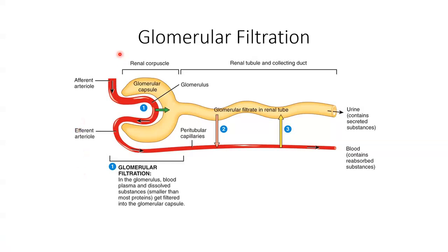Blood enters the glomerulus through the afferent arteriole, moving into that ball or cluster of capillaries within the Bowman's capsule. The blood is filtered through the filtration membrane. What remains in the bloodstream — mainly blood cells, platelets, and large proteins — exits through the efferent arteriole. What passes through the filtration membrane ends up in the Bowman's capsule, now called filtrate, which then moves into the proximal convoluted tubule.